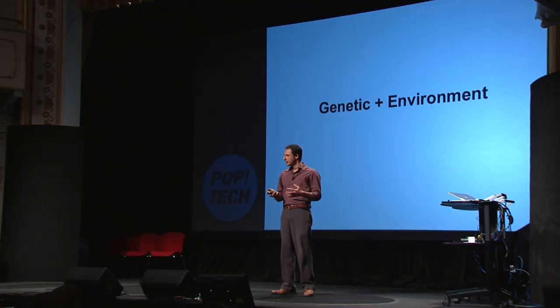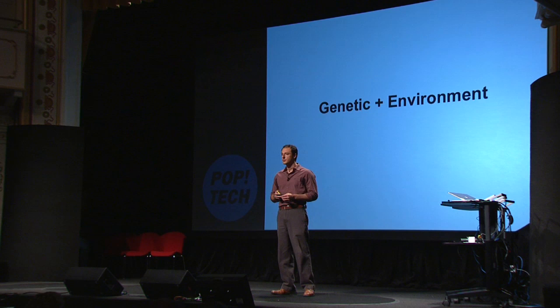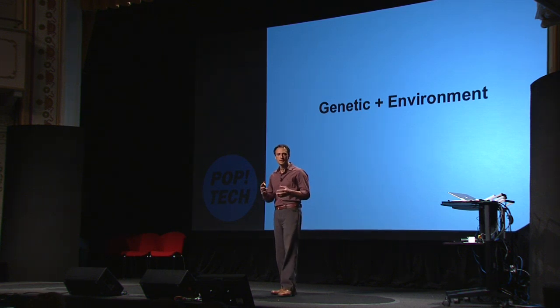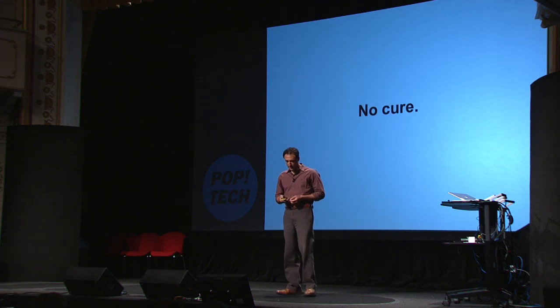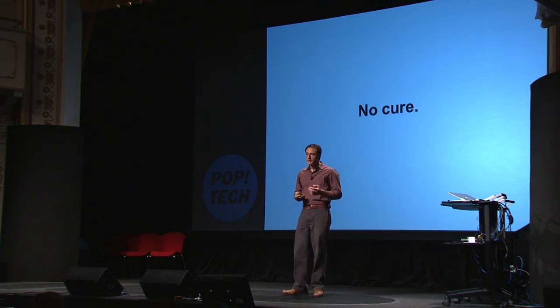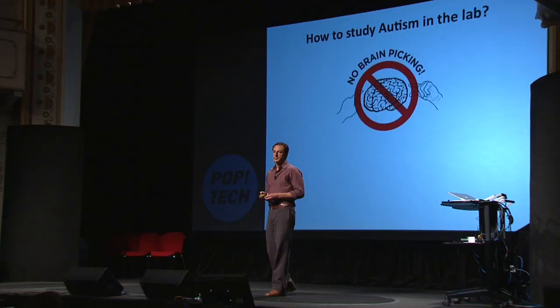That's the estimated cost over a lifetime of someone with autism. We don't know what causes autism. We know there is a strong genetic factor, but there is also a contribution from the environment, and we don't quite understand how these two factors interact with each other. There is no cure for autism. So how do we study autism in the lab?